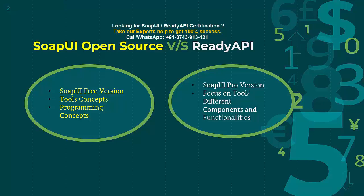SOAP UI has two versions: one is the SOAP UI free version and the other is the paid version. The paid version is called SOAP UI NG Pro or ReadyAPI. The company name is SmartBear and they give the option to get certified in either the SOAP UI free version or the paid version which is ReadyAPI. In the free version certification, they focus on tool concepts as well as programming concepts, so you must focus on the tool's different options, functionalities, and also programming concepts.